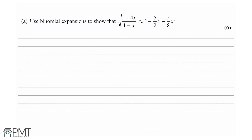We are asked to use a binomial expansion to show that the square root of 1 plus 4x over 1 minus x is approximately 1 plus 5 over 2x minus 5 over 8x squared, for 6 marks.